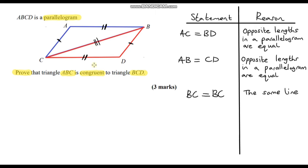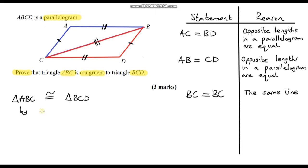Therefore we have proven that these two triangles are congruent. We just need to write a final concluding remark: triangle ABC is congruent — this is the symbol for congruent — to triangle BCD. And that is by SSS: side, side, side. We've used the SSS axiom to prove that these two triangles are congruent.